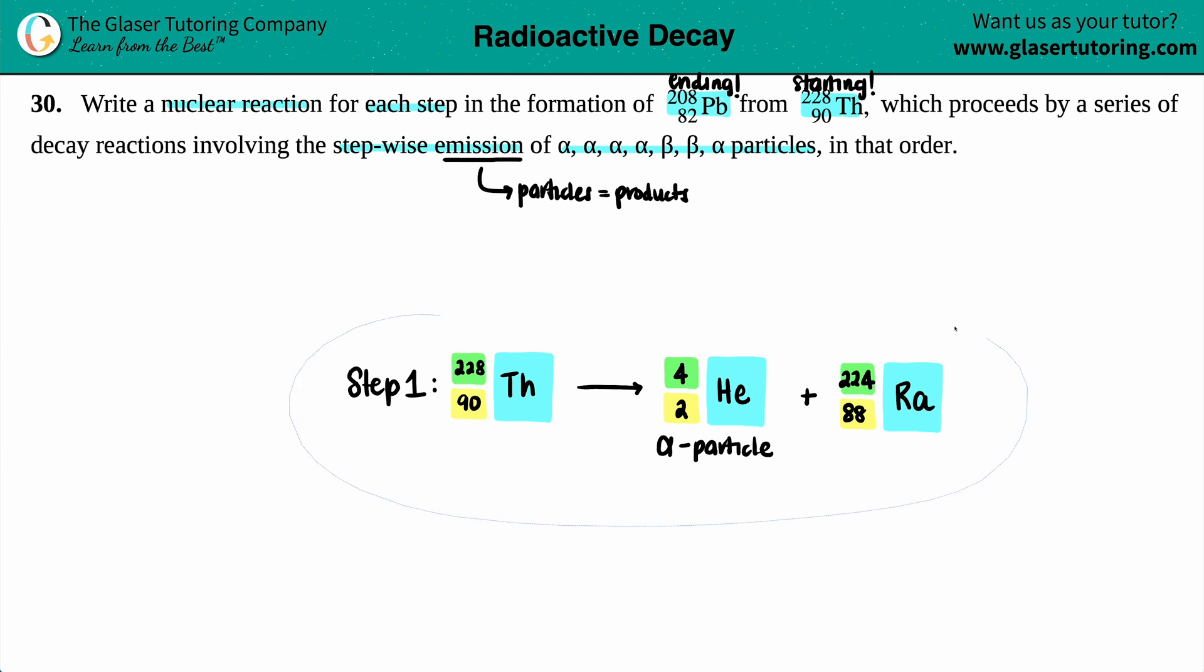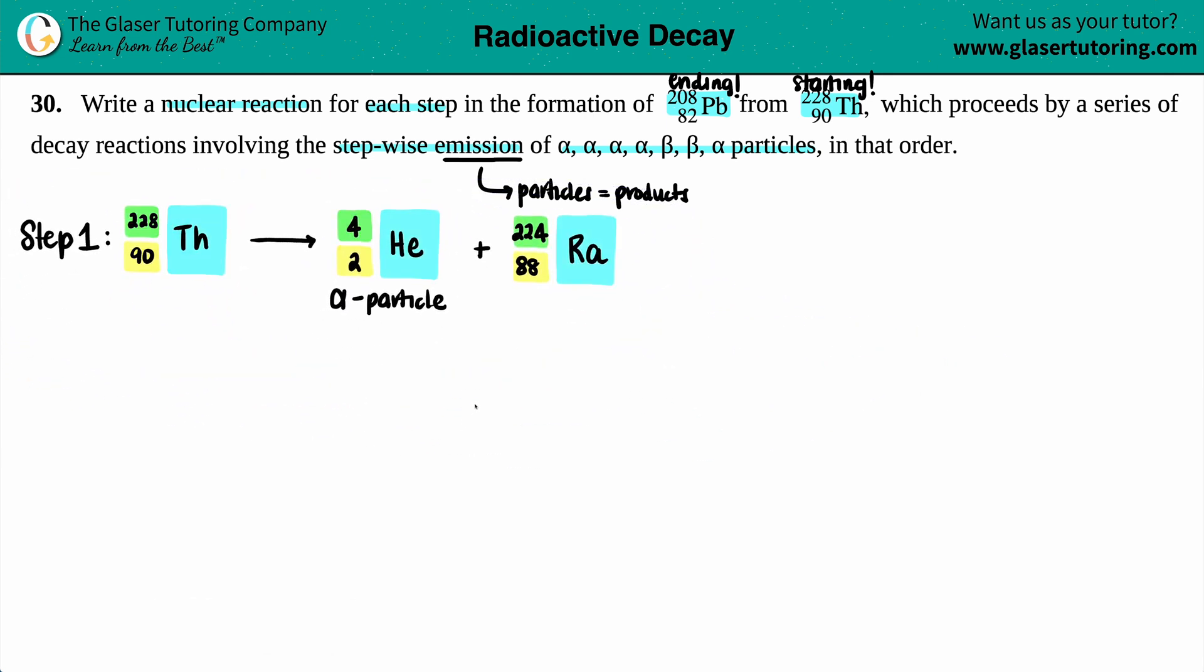Step one is done, now we move on to step two. The first alpha is done. Now the good thing about these stepwise reactions is that whatever isotope you left off as, that's who you're starting with in your second step or the next step. So now I'm going to take that radium, Ra-224, 88 on the bottom, and I'm going to be emitting a particle. They did tell us that the second particle was the alpha again, so no surprise there, helium.